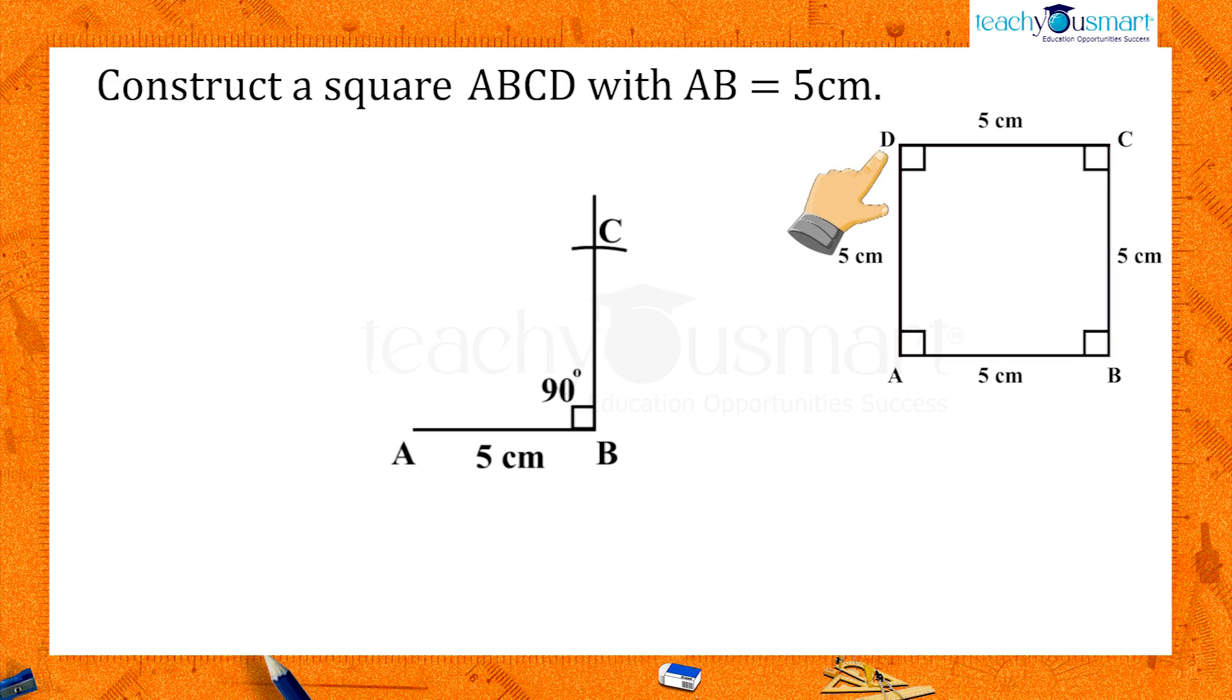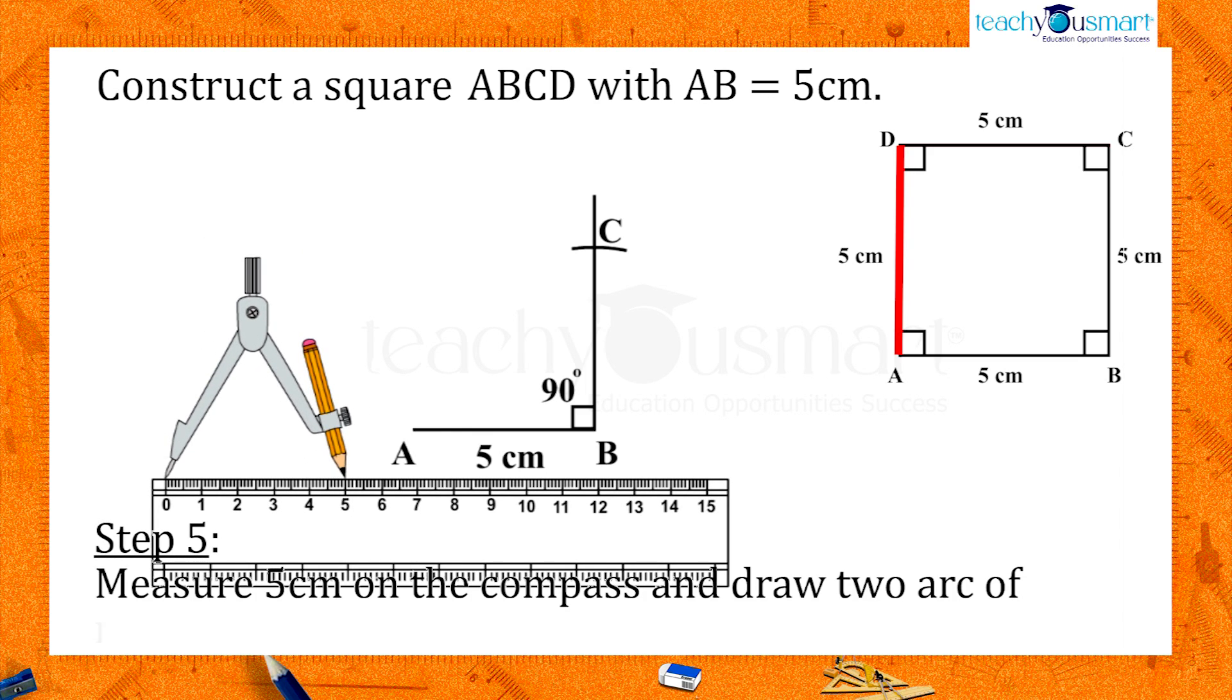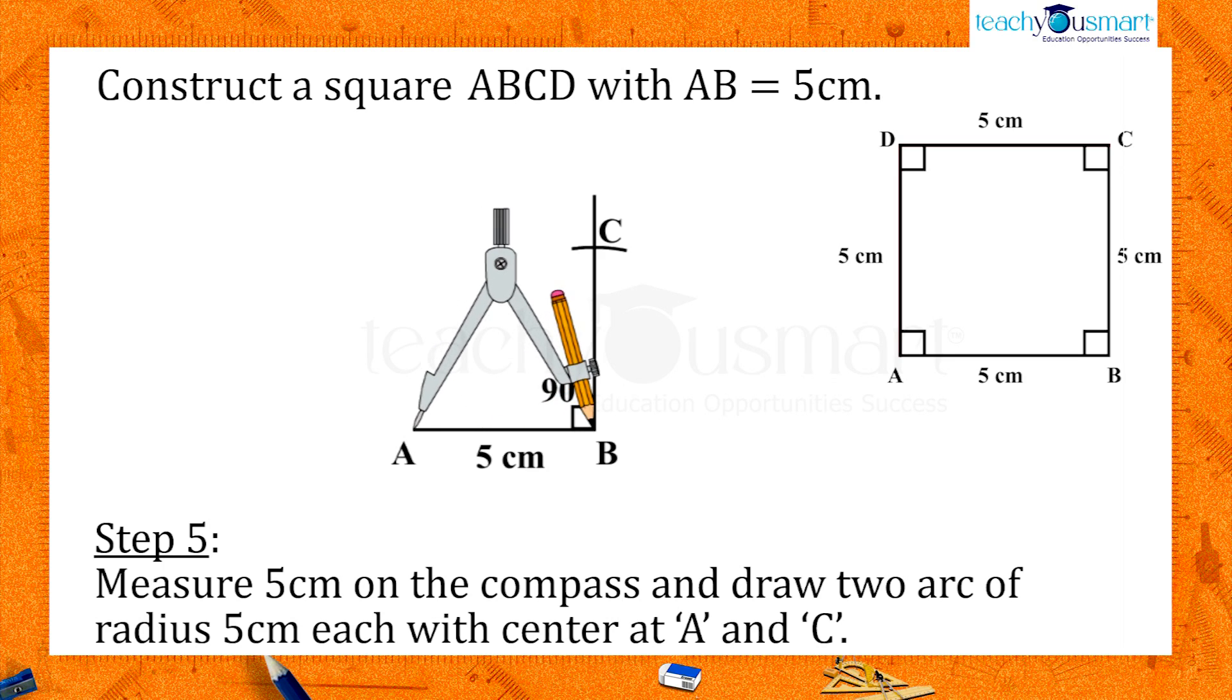Now we have to locate point D. From the rough sketch, it is clear that D is five centimeters away. So take the compass and draw two arcs of radius five centimeters each, with center at A and C. The point of intersection of these arcs will be the fourth vertex D.